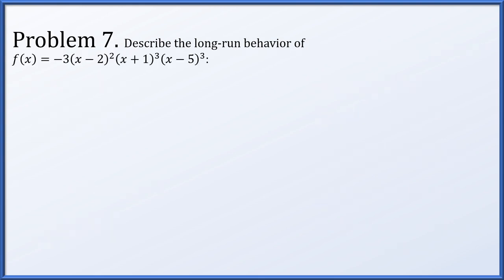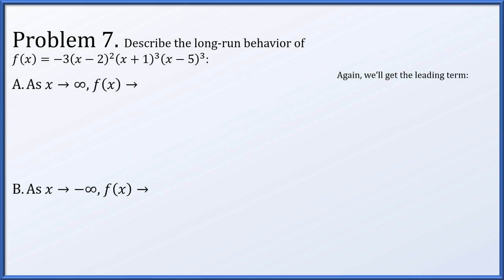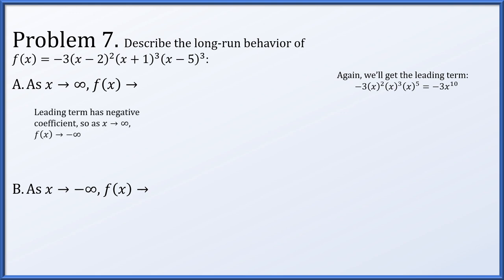Problem 7: describe the long-run behavior of the given polynomial. Again, we only need the leading term. Multiplying all the x-terms from the factors together, and including the leading coefficient of negative 3, gives a leading term of −3x¹⁰. The leading coefficient is negative, so as x → +∞, f(x) → −∞. The degree is 10, which is even, so to the left it also goes to −∞.